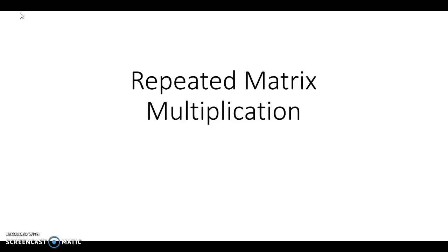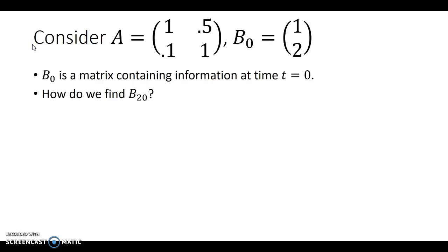This video is about the process of repeated matrix multiplication. Let's say we have a matrix A with quantities 1, 0.5 and 1, 1, and some matrix B with subscript 0, which is a column matrix containing 1, 2. The subscript indicates that this matrix contains some information at some point in time t equals 0, our initial starting time.